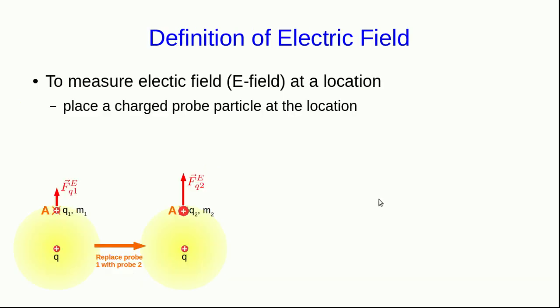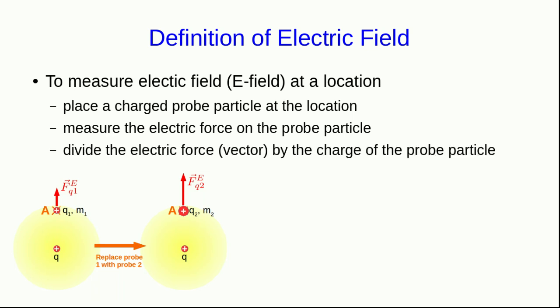This, then, is our prescription for measuring an electric field at any location. We'll tend to abbreviate electric field as just E-field. If you want to measure it at some place, say A, you place a charged probe particle at that location. You measure the electric force on the probe particle, and now you divide that electric force, which is a vector, by the charge of the probe particle. The result is a vector that we call the electric field vector. And notice in this example, because we know that the forces on Q1 and Q2 are proportional to the charges on Q1 and Q2, when we divide each of those by those charges, we get an answer that doesn't depend on which probe charge we used.